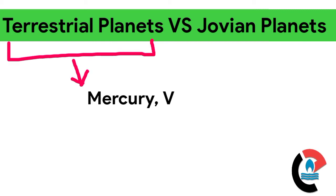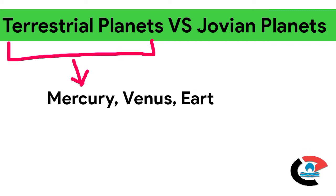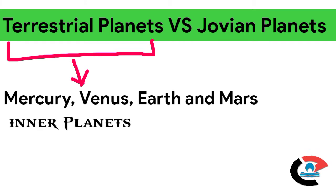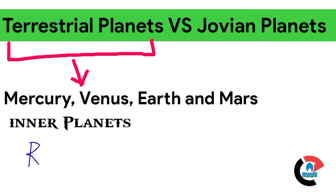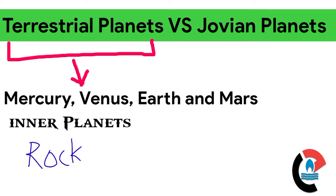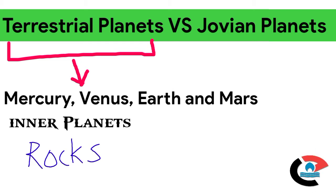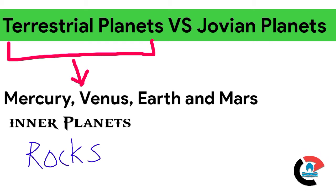Mercury, Venus, Earth and Mars are the planets closest to the sun. They are called the inner planets. The inner planets are made up mostly of rocks. Therefore, they are also called rocky or terrestrial planets. They are very small as compared to the outer planets, and therefore also called inferior planets.